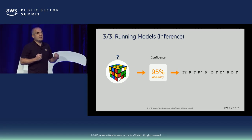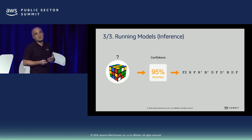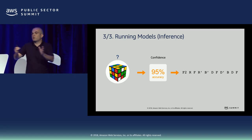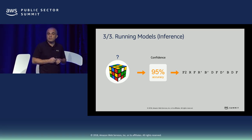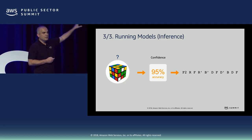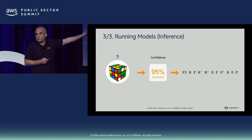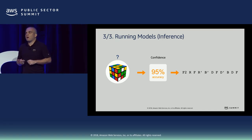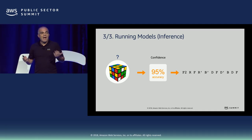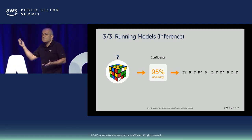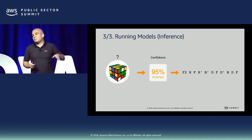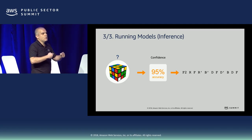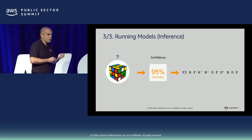The third and last stage is inference — when you move your model to production. You can then bring a new Rubik's Cube combination the model has never seen before and get results. In this example, we achieve about 95% accuracy. Is 95% good or bad? The answer depends on your business. For some use cases it's good enough; others need more work. To improve from 95% to 99%, you can bring more data or try a new learning strategy.